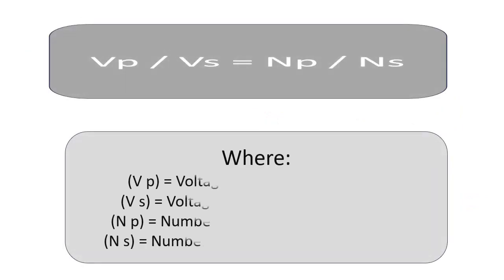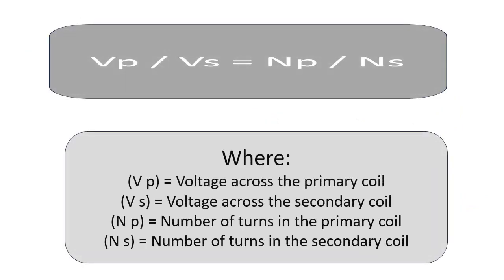Vp is voltage across the primary coil, Vs is voltage across the secondary coil, Np is number of turns in the primary coil, and Ns is number of turns in the secondary coil.